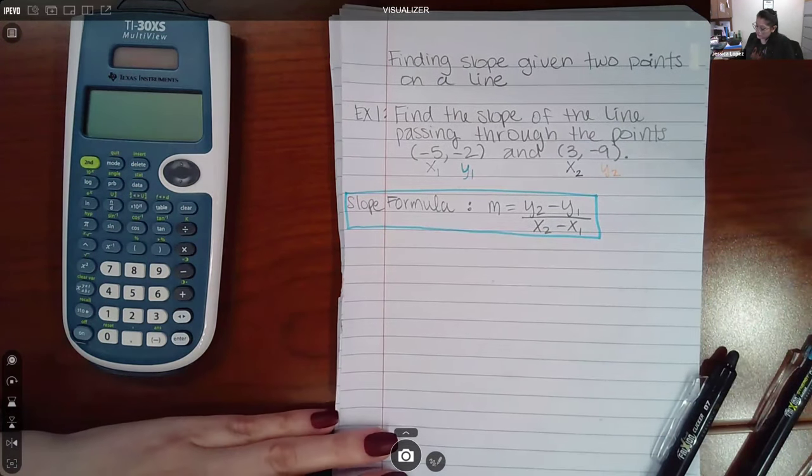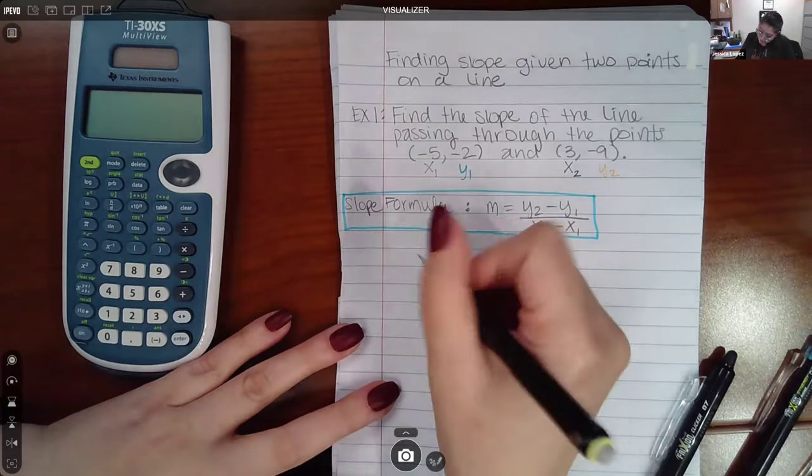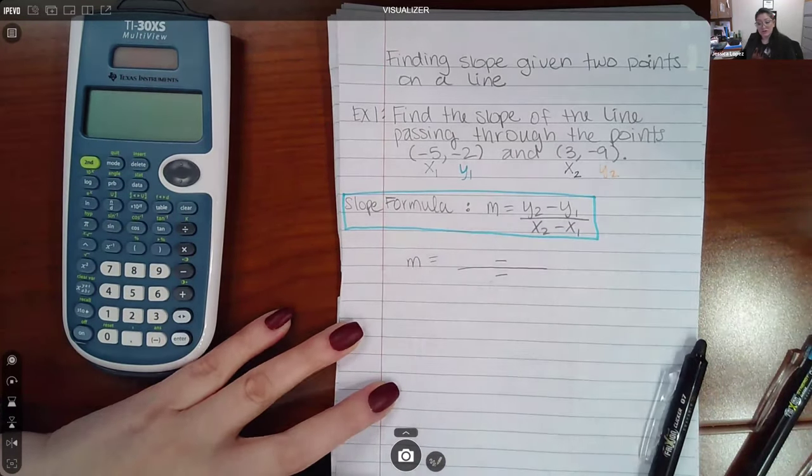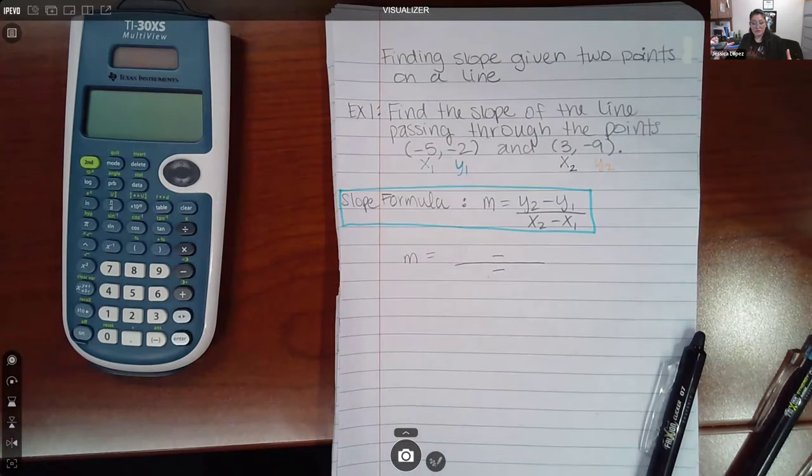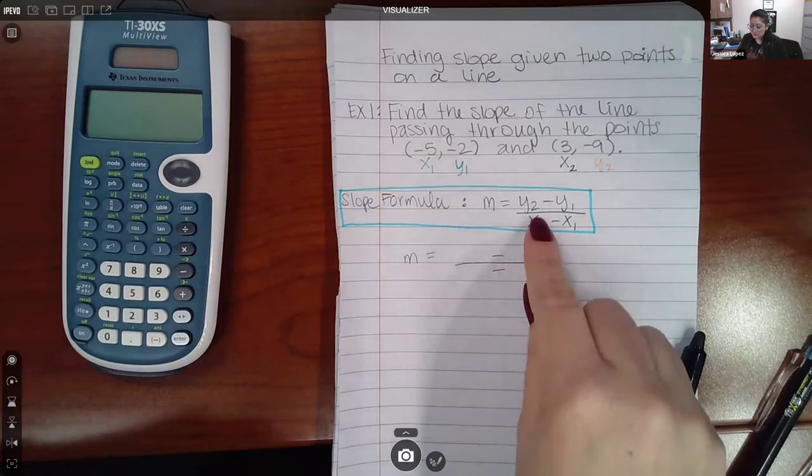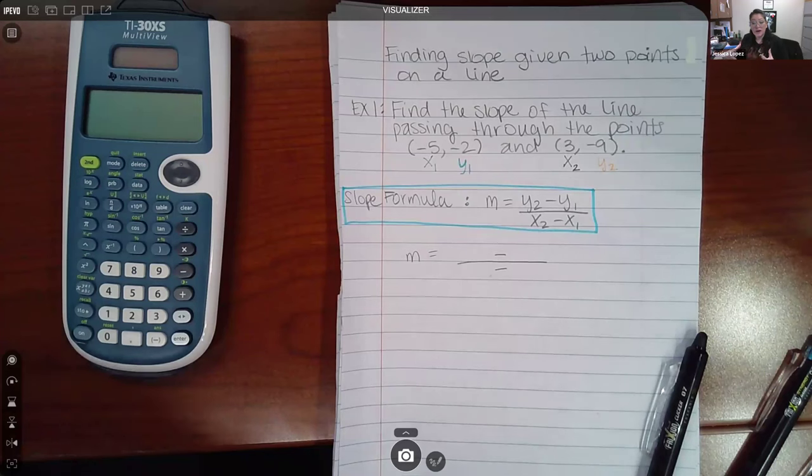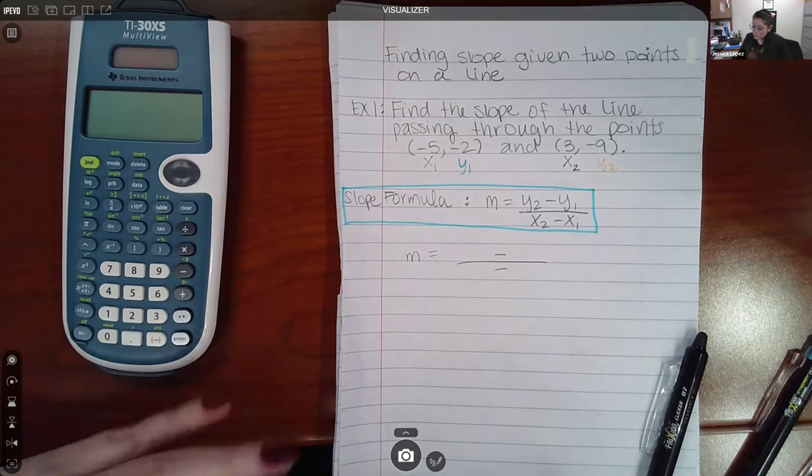Once you have that all labeled, you should be able to calculate your slope just by recreating this fraction here without the letters. Now what I'm going to do is replace each of those four terms with the values that they represent.